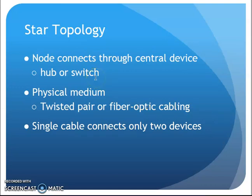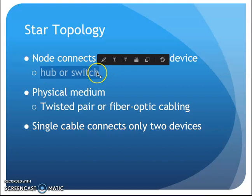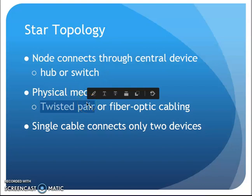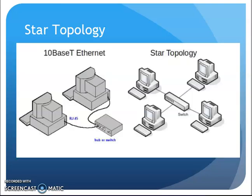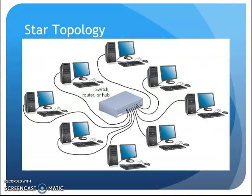Star topology — all the devices are connected to a central device, a hub or a switch. Initially it was a hub; today it's a switch. Most devices are connected with twisted pair cabling — that patch cable you're using at home is twisted pair cabling. Each device has a twisted pair cable going from it into the hub or switch. You can see there's an individual cable coming from every computer into this hub or switch.